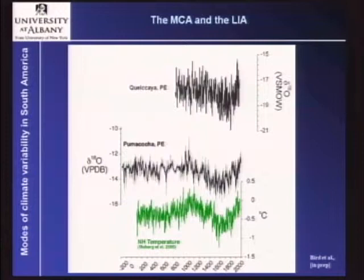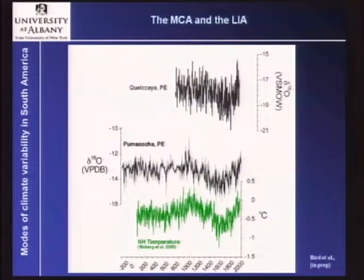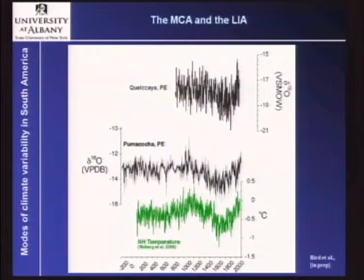The curve at the bottom is the Moberg et al. Northern Hemisphere temperature reconstruction, and you can see how nicely these two line up. These are independent records recording something completely different: the green curve is Northern Hemisphere temperature, the black curve is the hydrologic cycle over the South American continent. It shows how sensitive tropical precipitation can be to forcing from the Northern Hemisphere. The cooling in the Northern Hemisphere did have a significant impact on the hydrologic cycle and the South American monsoon. Whether this is actually a shift we can't tell from this record alone, but what we can say is that it is an intensification — a strengthening of the hydrologic cycle.